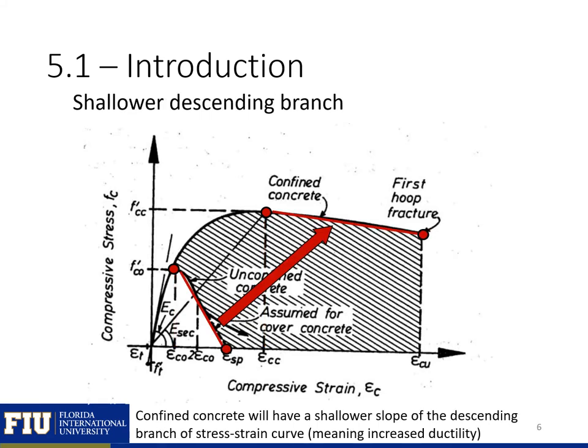The next effect highlighted here is that confinement will allow our stress-strain curve to have a shallower descending branch. In our conventional concrete, we can have a pretty steep drop off. For high-strength concretes, we can have a brittle failure. But if we have confinement, we can add some ductility and give us some post-ultimate strength, which allows load to redistribute in actual structures.